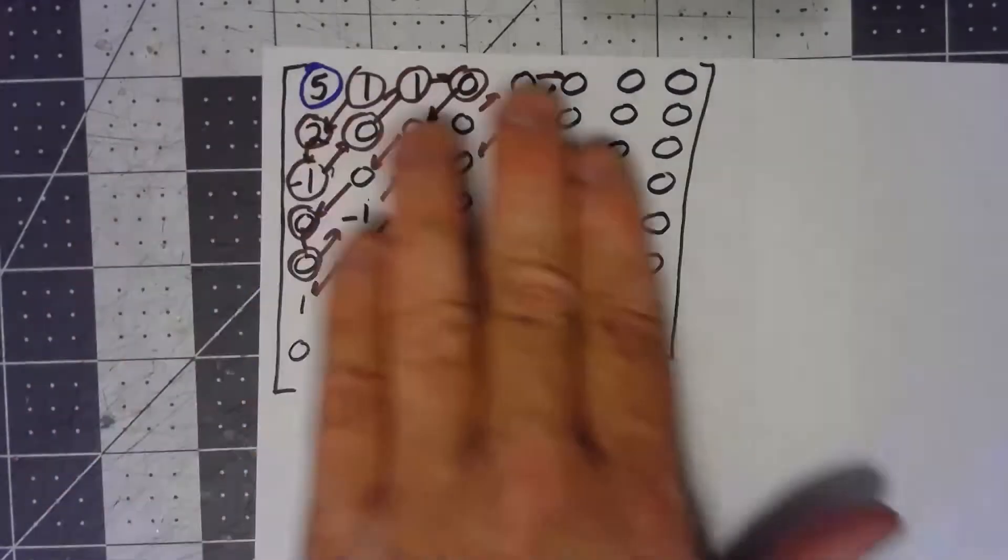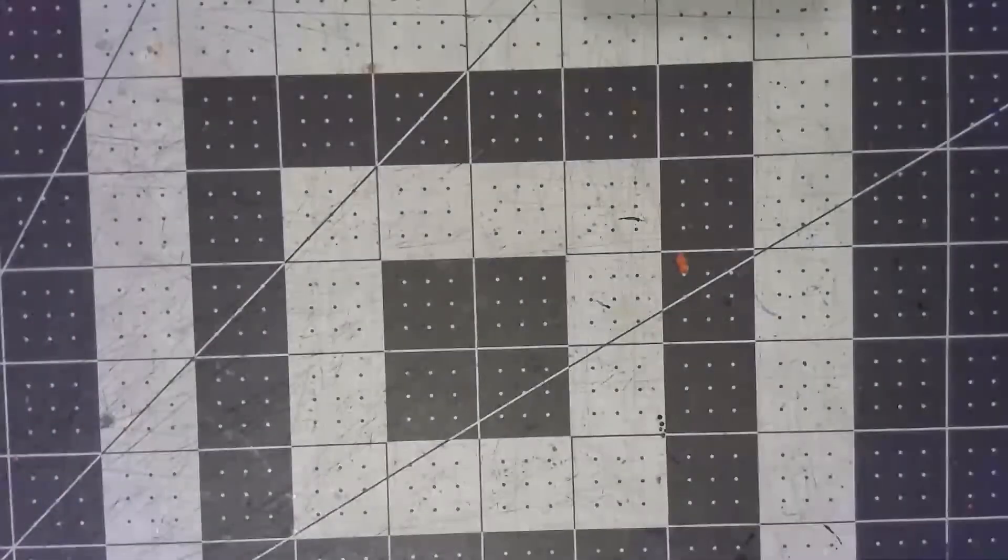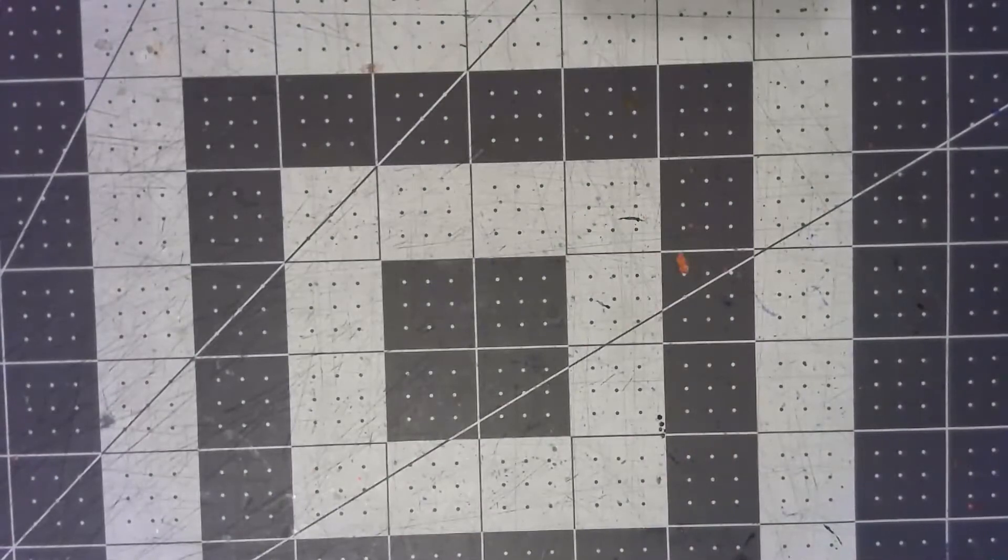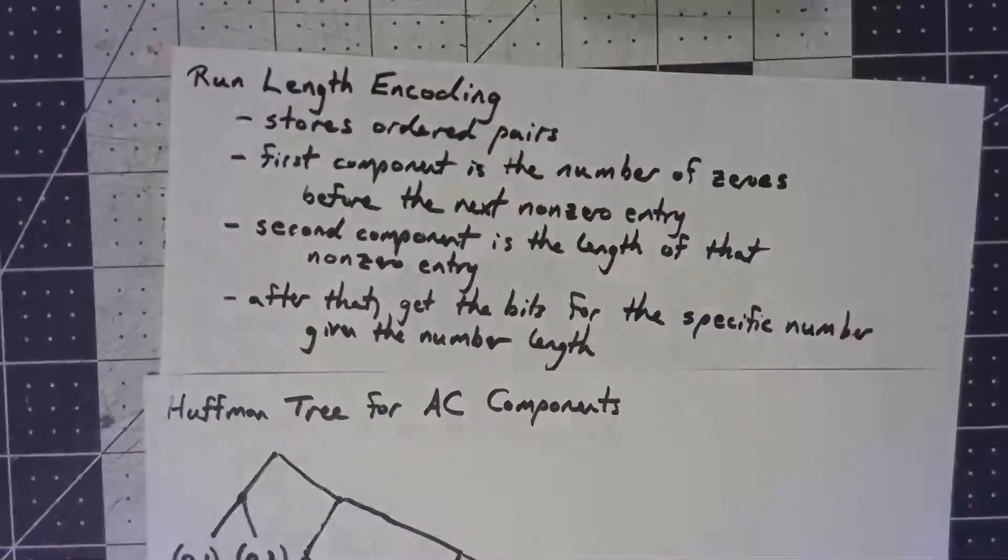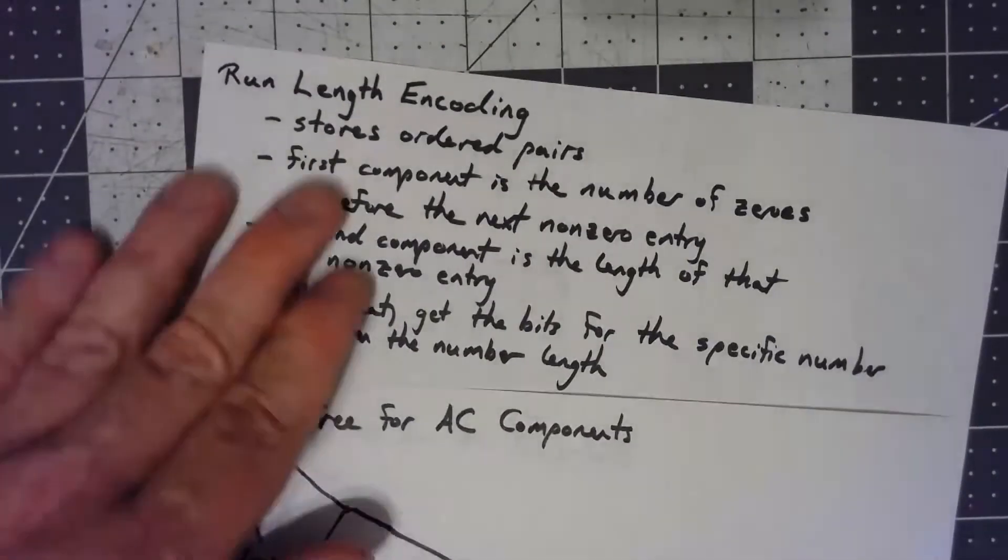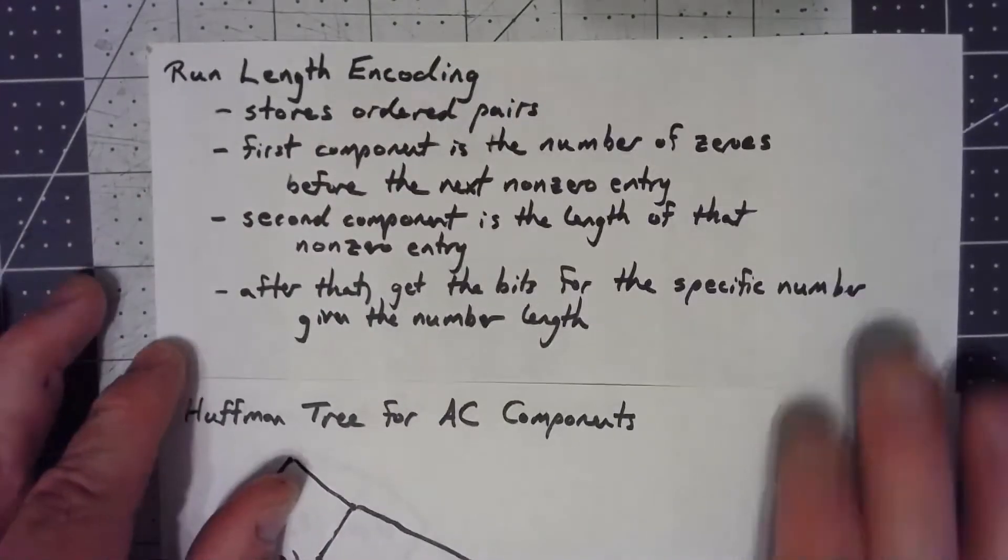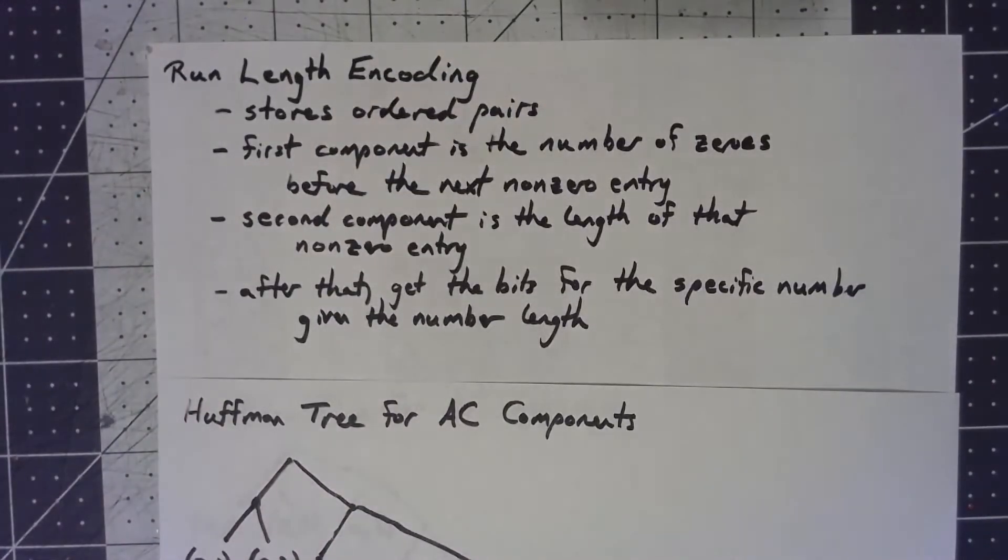So how do we go ahead and code all these numbers efficiently? Well, we do something which we call run length encoding. And what it does is it stores not just numbers, but it actually stores ordered pairs.